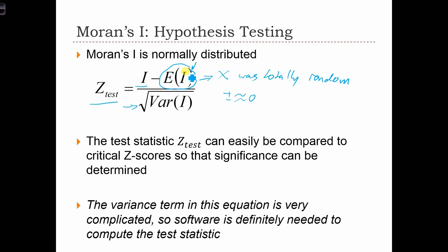Once we know a z-score for each I, we can determine whether or not that Moran's I is significant or not. So if we have a normal curve, over here we're going to have a z equals 0. That's the case when I is going to equal the expected value of I if x was totally random.